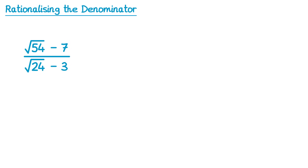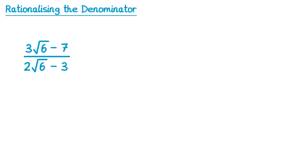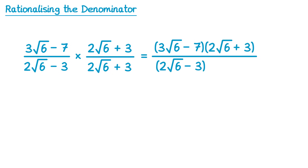Now let's try a really tricky example. For this one we've actually got two terms on the top and the bottom, and the surds can be simplified first. Let's start with root 54 — this is the same as root 9 times root 6, and root 9 is just 3, so that's 3 root 6. And then root 24 can also be simplified: that's root 4 times root 6, root 4 is just 2, so we have 2 root 6. So let's replace root 54 with 3 root 6 and root 24 with 2 root 6. Now we're ready to rationalise the denominator. Since this one has two terms on the bottom, we're going to multiply by exactly the same thing but change the sign in between them. So instead of 2 root 6 subtract 3, we're going to use 2 root 6 plus 3 — on both the top and the bottom. We've got (3 root 6 minus 7) times (2 root 6 plus 3) on the top, and (2 root 6 minus 3) times (2 root 6 plus 3) on the bottom.